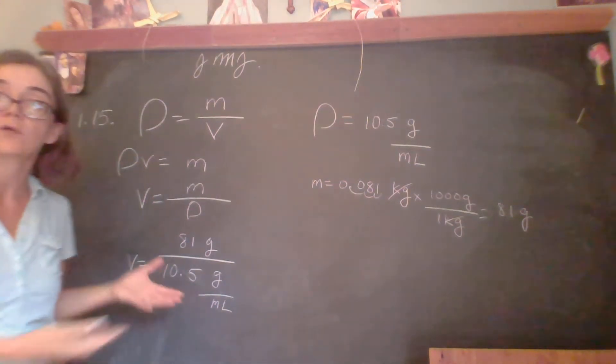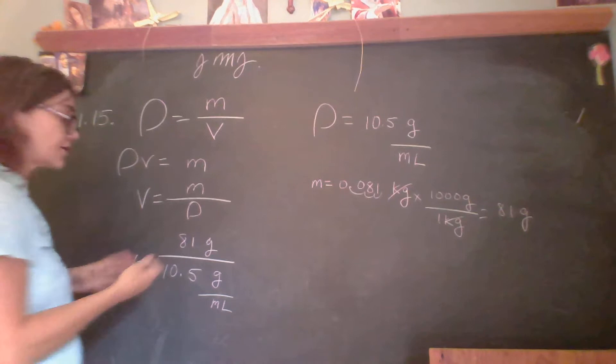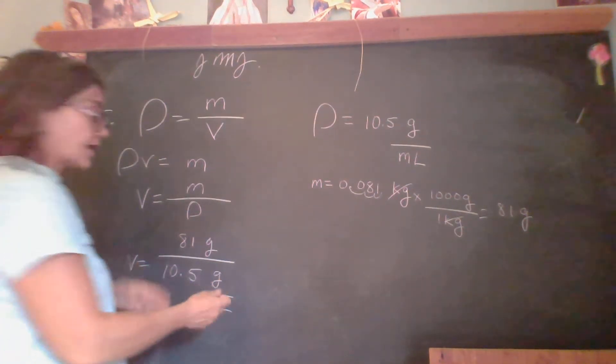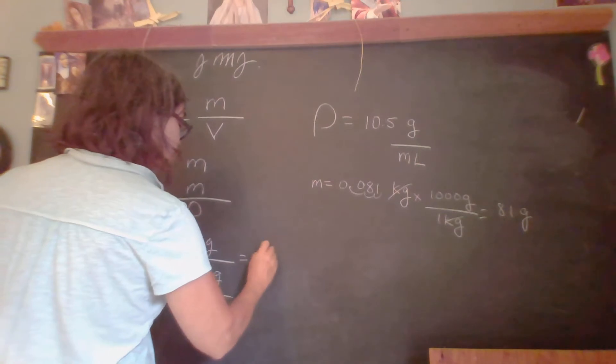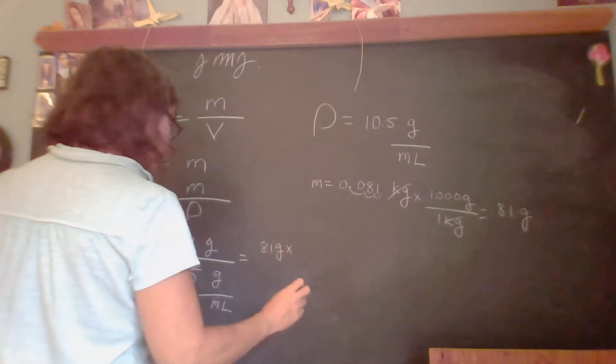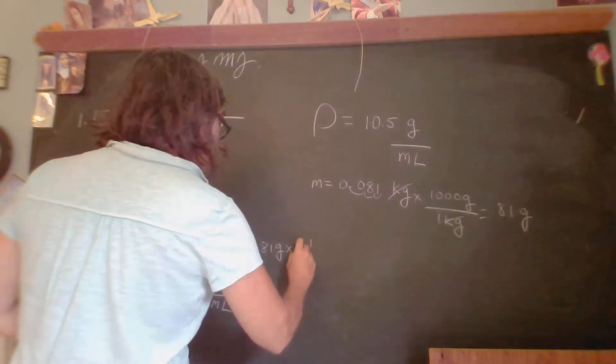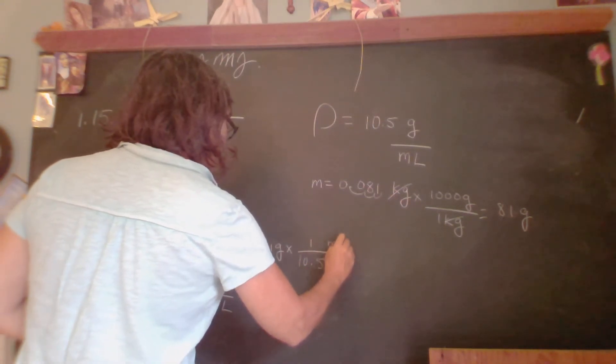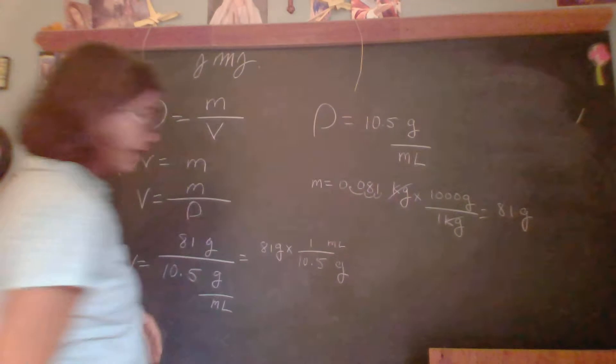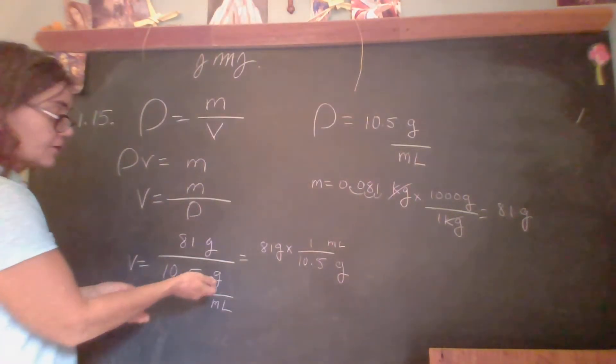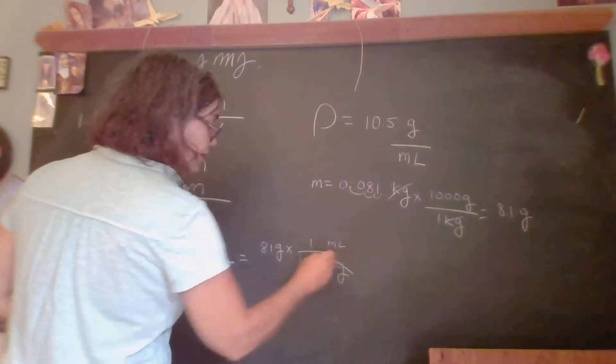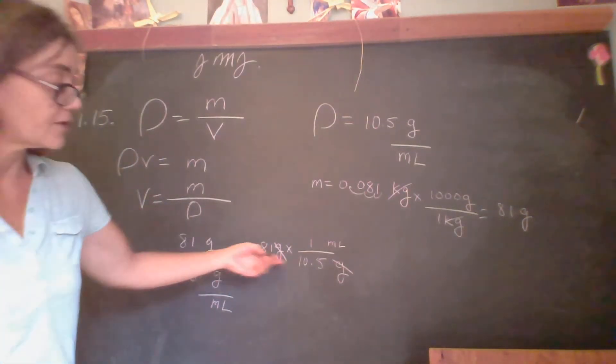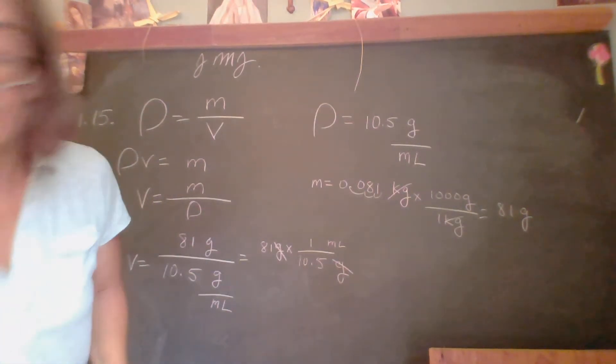So the volume will be 81 grams divided by 10.5 grams per milliliter. Now, looking at this, those are weird units. So you have to remember, when you're dividing, you're really multiplying by the reciprocal. So that's the same as saying 81 grams times 1 over 10.5 milliliters per gram.